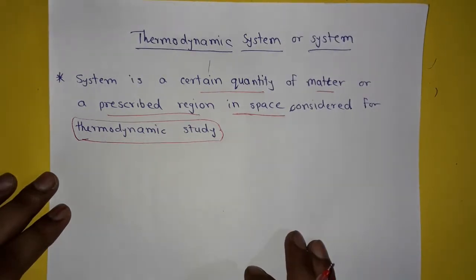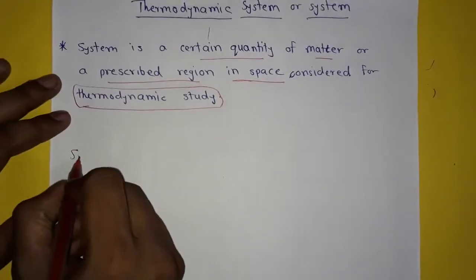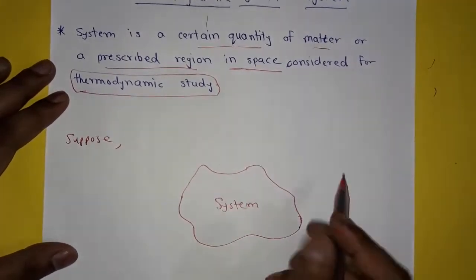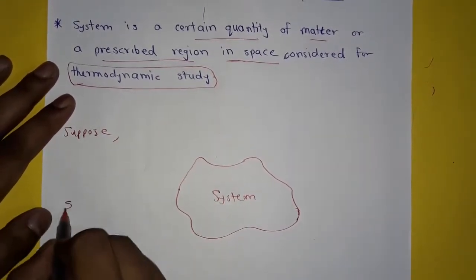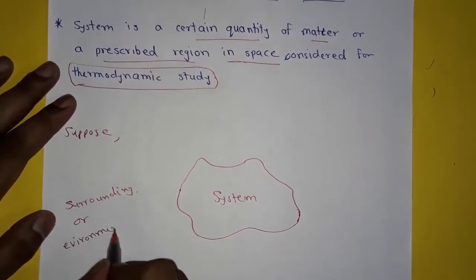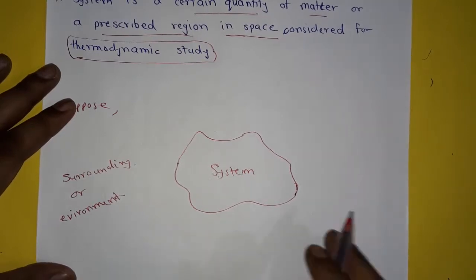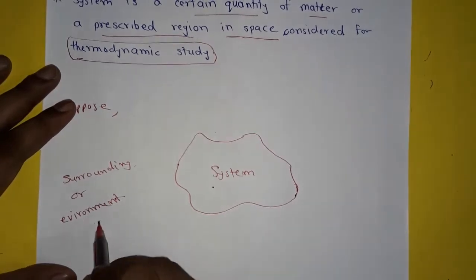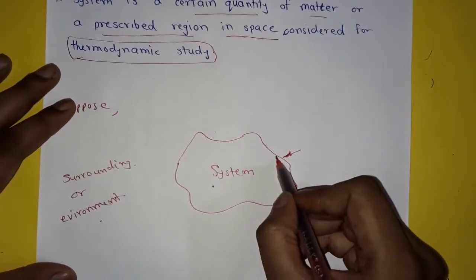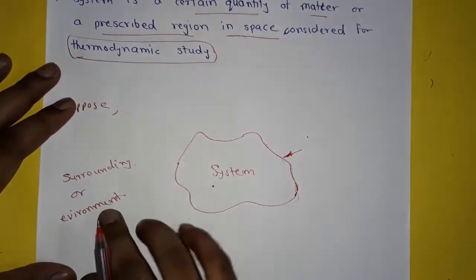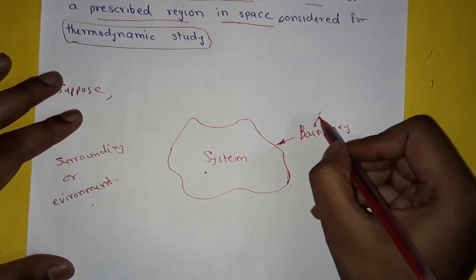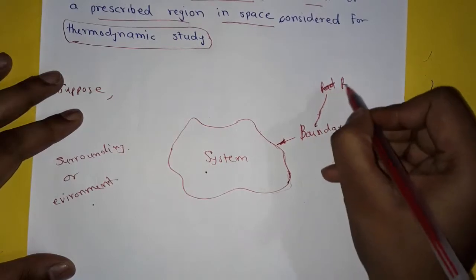Suppose this is our system. Then the region outside this system is called as surroundings, or you can say environment. And the surface that separates the system and surroundings is called the boundary of the system. That is, here this line is the boundary. The boundary separates the system and surroundings. The boundary can be real or imaginary.